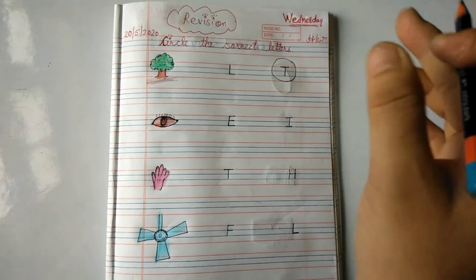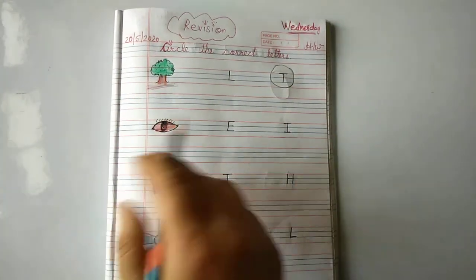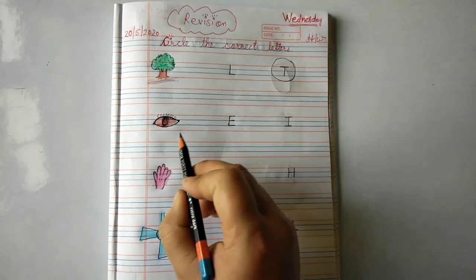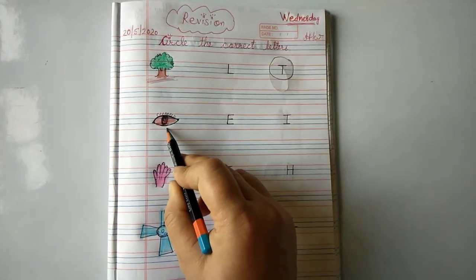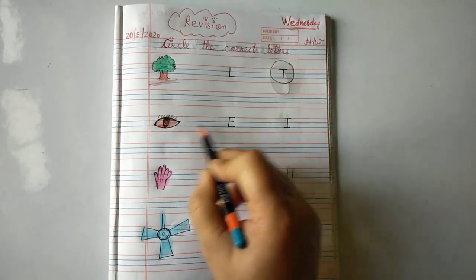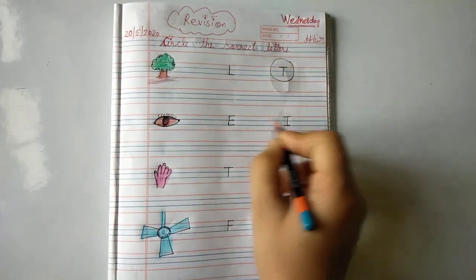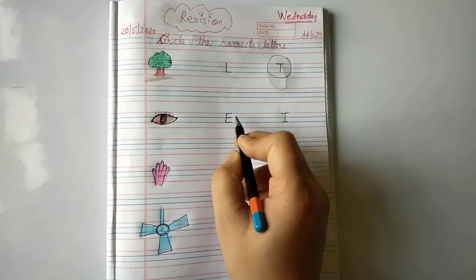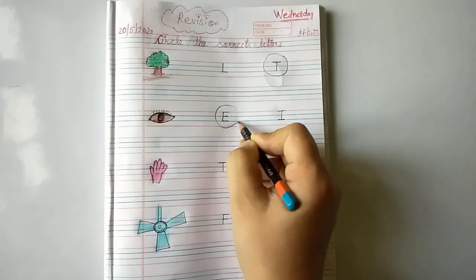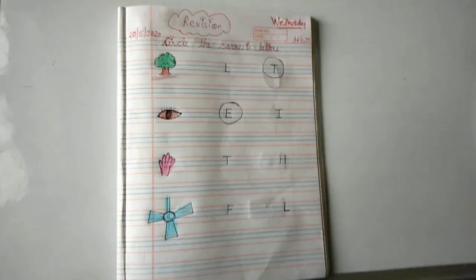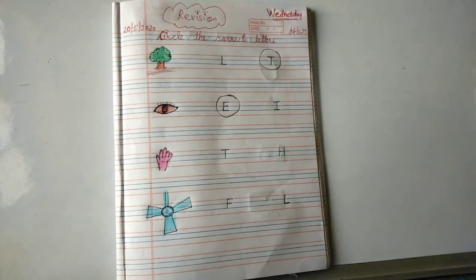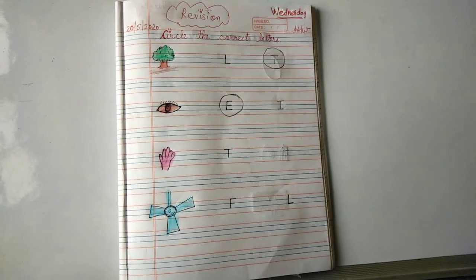Now you should understand what we have to do and which letter which picture starts with. Now the next picture is eyes. Which letter does eyes start with? Tell me quickly. E for eyes or I for eyes? Letter E makes eyes, so you have to circle this like this.